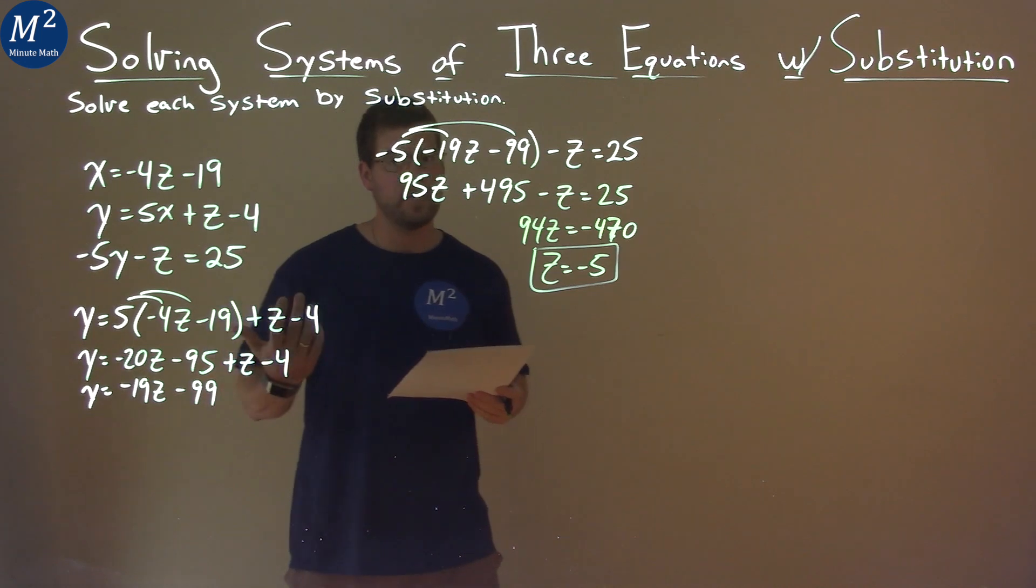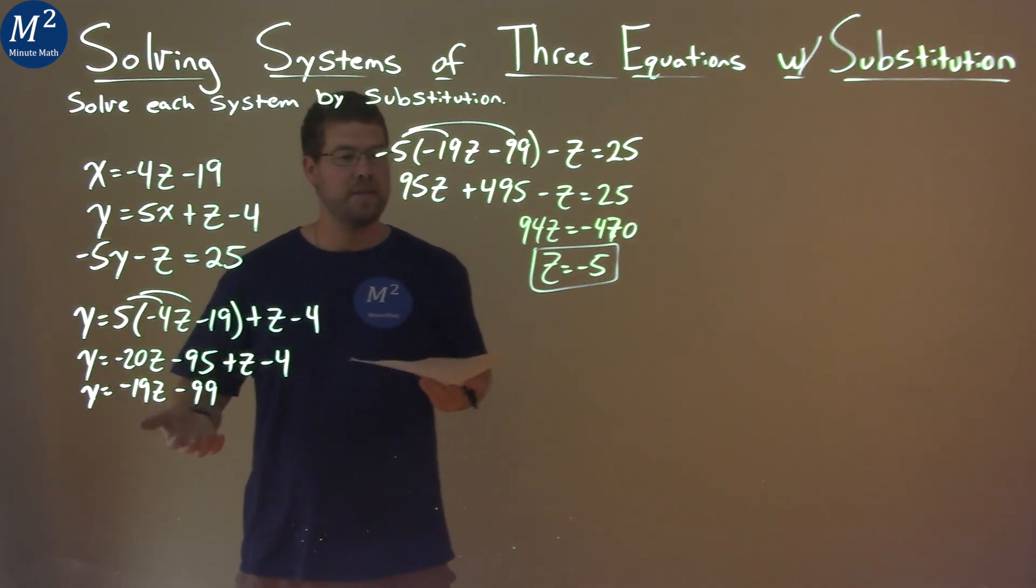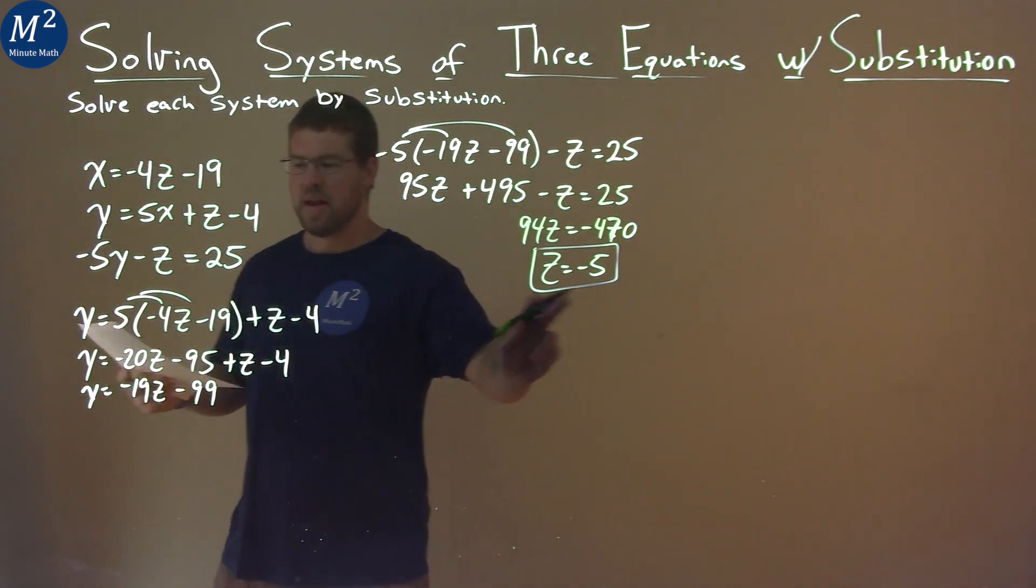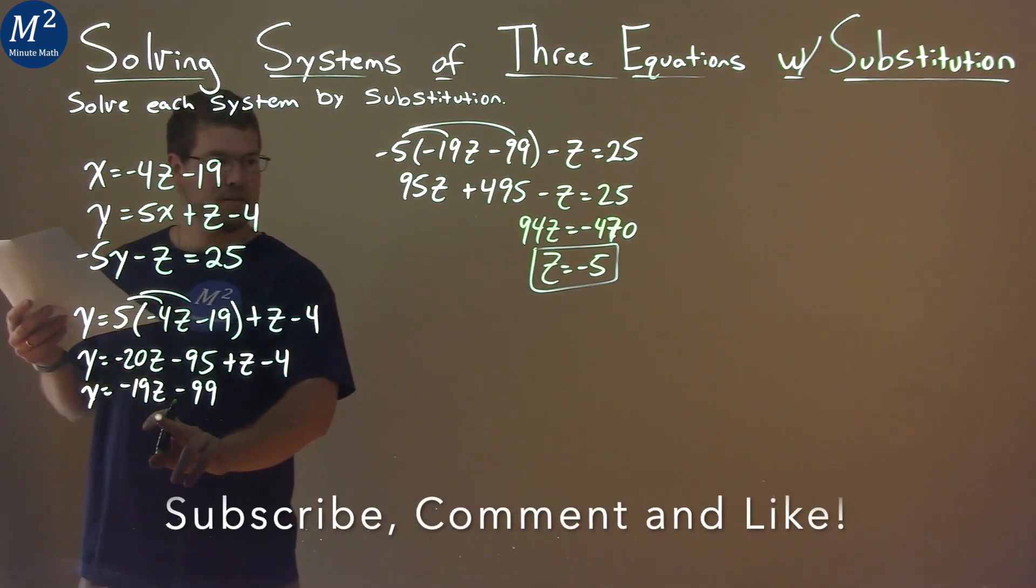So we're going from here. I tried to find the easiest way to substitute it in. And right here, we already have an equation. Let's just continue that out. We're just going back here. And z is negative 5.